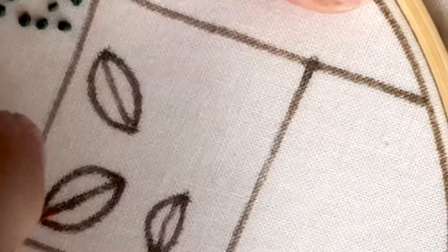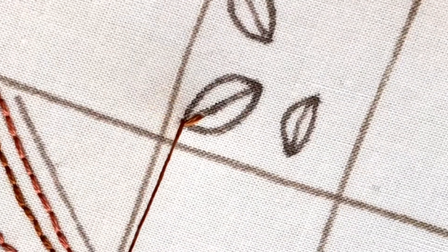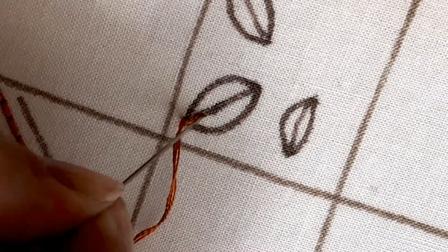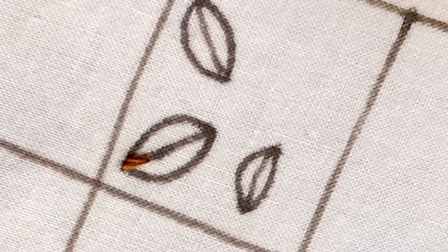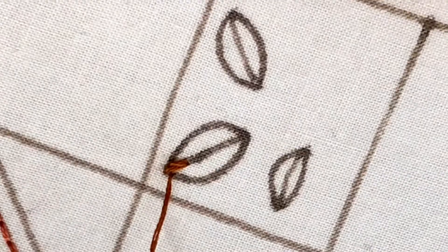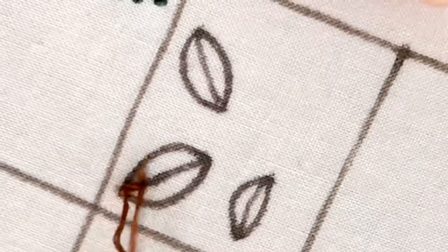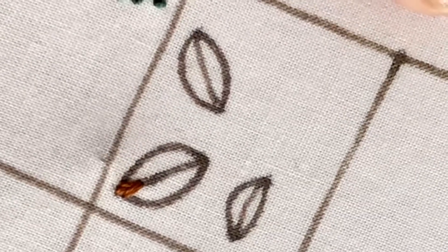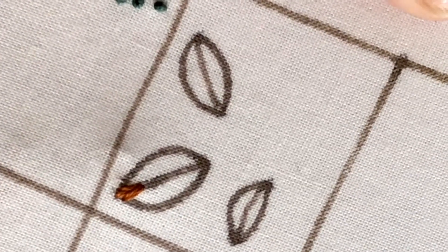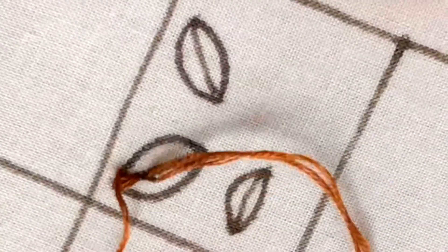And then we're going to come up through the fabric again on side A and then we're going to overlap at the bottom of that initial stitch. And then we're going to come back up on side B and overlap the side A stitch. We're going to come back up on side A and overlap on the bottom of the side B stitch.